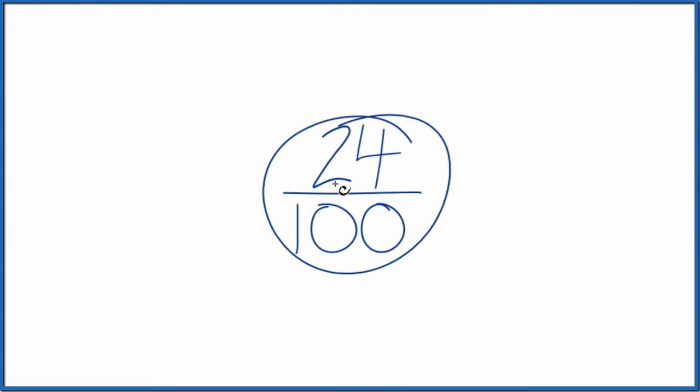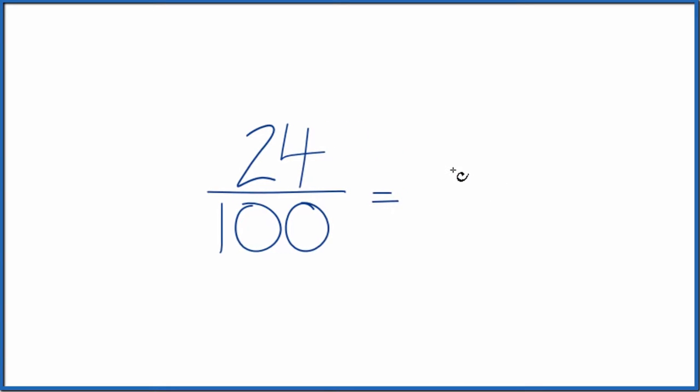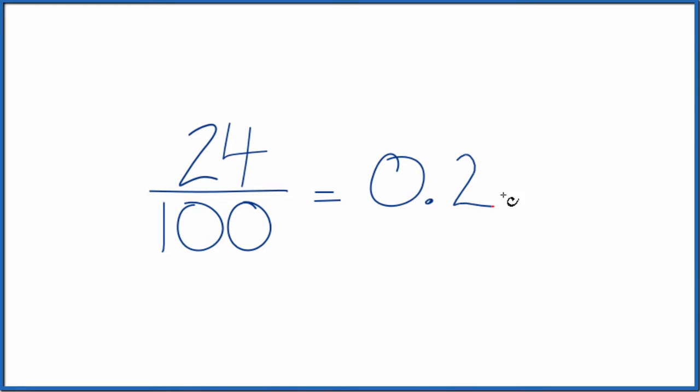Let's convert the fraction 24 over 100 to a decimal, and there's a few ways we could do that. First off, you could just take 24 and divide it by 100 on your calculator. That would give you a decimal, or you could divide 24 by 100 longhand. Either way, you'll end up with 0.24.